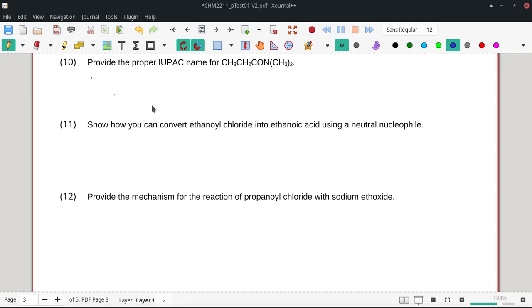All right, looking at number 11 here, it wants to know how we can convert ethanoyl chloride into ethanoic acid. All right, so ethanoyl chloride into ethanoic acid is one of our easy conversions.